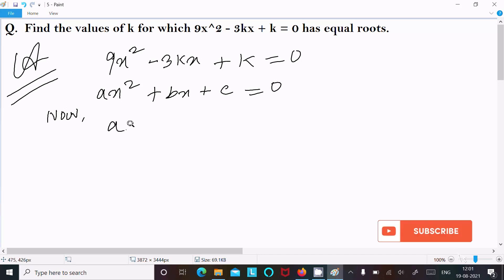The value of a is 9, b value is -3k, and c value is k. So c equals k.